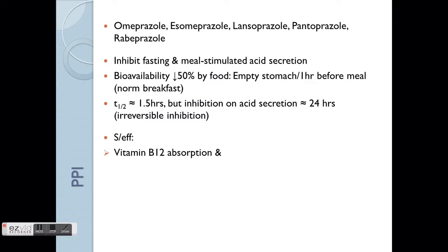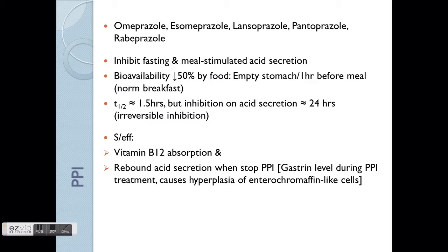The side effects include, for example, impaired vitamin B12 absorption, because vitamin B12 needs an acidic environment in the stomach to be absorbed effectively. If someone is on PPI, gastric acid secretion will be minimized, raising the stomach pH above normal. Another important side effect is rebound acid secretion when the person stops PPI — because when the proton pumps are inhibited, and then the drug is stopped, those proton pumps will stimulate an increased level of secretion.